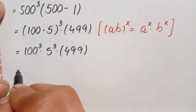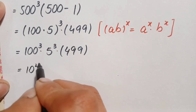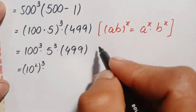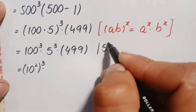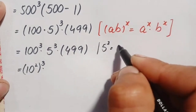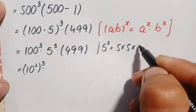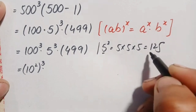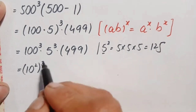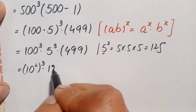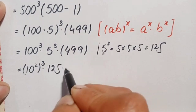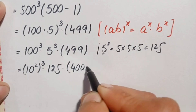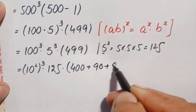We can write 100 as 10 squared, so 100 to the power 3 becomes (10 squared) to the power 3. Also, 5 cubed equals 5 times 5 equals 25, and 25 times 5 equals 125, so 5 cubed is 125. We replace that and write 499 as the sum of 400 plus 90 plus 9.